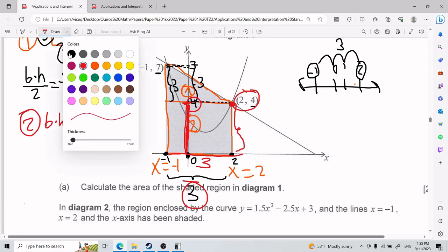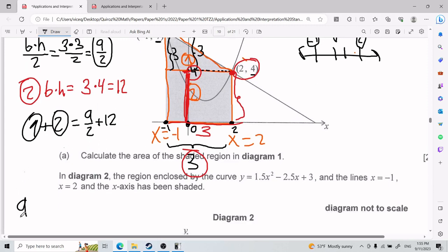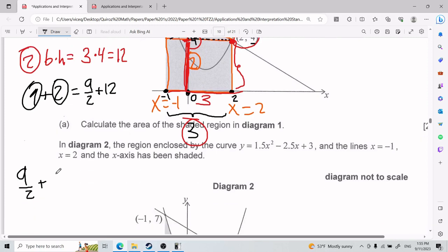So 3 times 4 gives you 12. So if I go ahead and add both of them together, I'm going to have the area of the first plus the area of the second, which means I have 9 over 2 plus 12, which if I convert it into fractions, it's going to be 9 over 2 plus 24 over 2, which gives you 33 divided by 2.